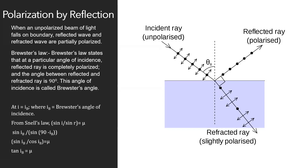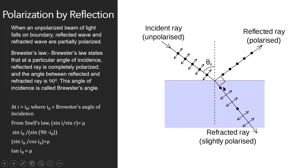Brewster's law states that at a particular angle of incidence, the reflected ray is completely polarized. This angle of incidence is called Brewster's angle (Ib or θB). The particular angle at which the reflected ray is completely polarized depends upon the refractive index of the medium. The refracted ray shows partial polarization, and the angle between the reflected and refracted rays is 90 degrees.